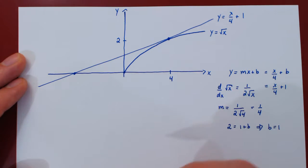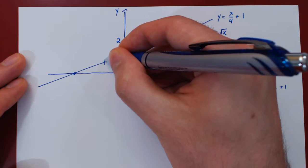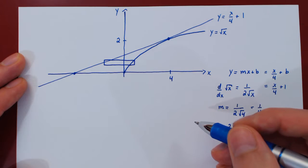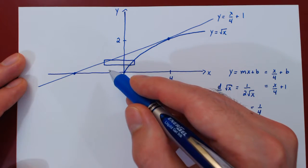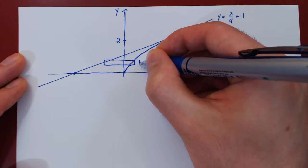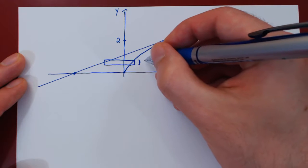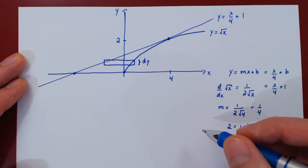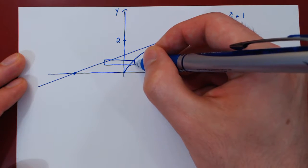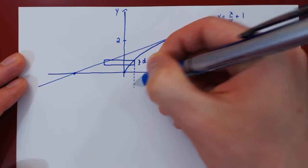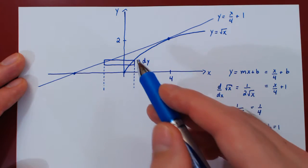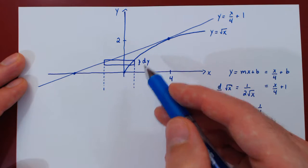Let's draw a generic horizontal rectangle. If we can find the area of this rectangle, then by adding the areas of all rectangles we obtain the total area of the region. The width of the rectangle is a small change along the y-axis, so the width is dy. The length of the rectangle is a segment along the x-axis, so we need the two x-values — to the right and left of our rectangle. Since we integrate with respect to y, everything must be a function of y.